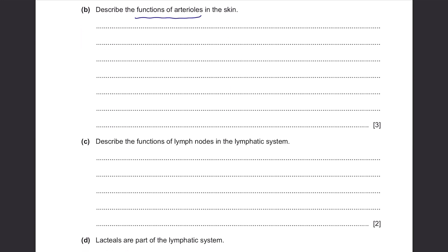Describe the functions of arterioles in the skin. Arterioles, being blood vessels, carry blood to capillaries. They have the ability to control the amount of blood that flows through the capillaries, which is extremely useful during homeostasis. When your body senses a change in temperature, it will try to maintain your body temperature by either vasoconstriction or vasodilation — the arteriole sends less or more blood flow through the capillaries to maintain your body temperature.